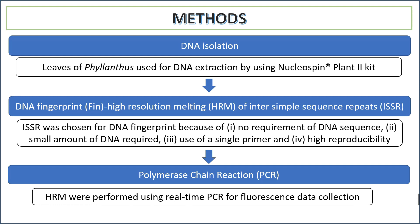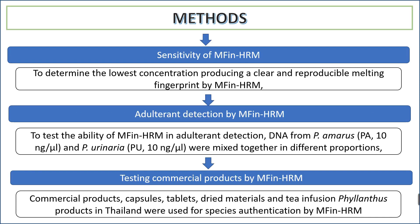PCR — polymerase chain reaction — was performed using a real-time PCR with fluorescent data collection. We then tested the sensitivity of MFin-HRM technology to determine the lower concentration of GC content and reproducibility of the melting fingerprint. Adulteration detection was also tested to assess the ability of MFin-HRM in detecting the amount of DNA present in a pure species mixed with another.